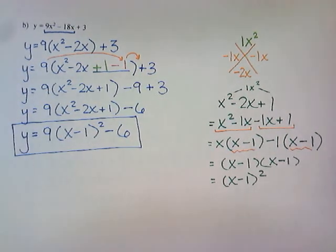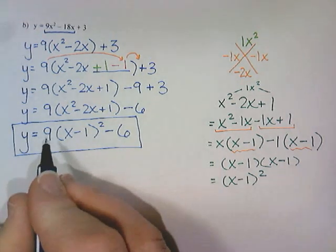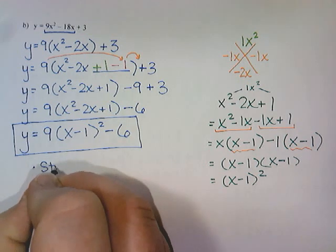Alright, there is one last thing we need to do. The question originally said complete the square and then state the transformations. So in our A position, we have 9. So that is a stretch of 9.